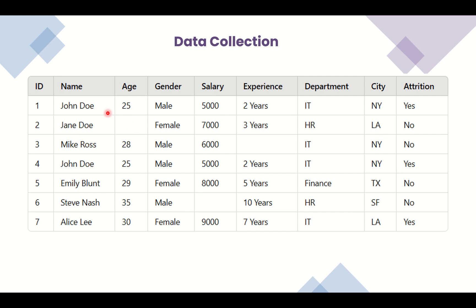Here you can see that we collected the data but there are some missing values. For example, for some users, we have the age value missing; for other users, experience is missing; and for the user with ID 6, the salary is missing. In the second step — the data cleaning and organizing step — we have to fill in values for these missing fields, and we also convert data from one format to another.